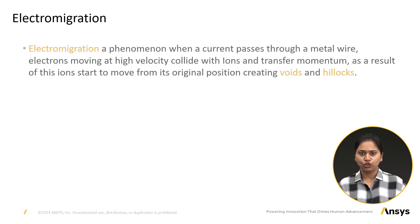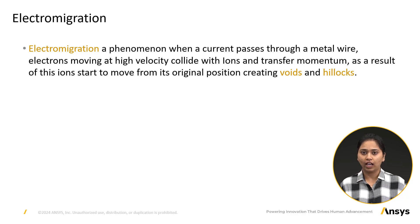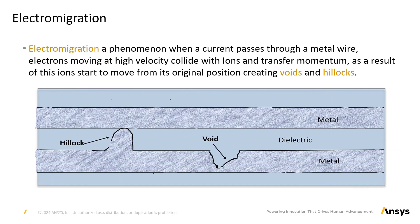Due to the collision of electrons with ions, these ions tend to move from their original position and accumulate elsewhere. The places from where atoms have moved create empty spaces known as voids, as shown in the figure. These atoms accumulate at other places, forming hill-like structures known as hillocks. Over time, these voids can become open circuits while the hillocks can short with adjacent metals, causing a short circuit. Both these occurrences can impact the functionality and performance of the chip.